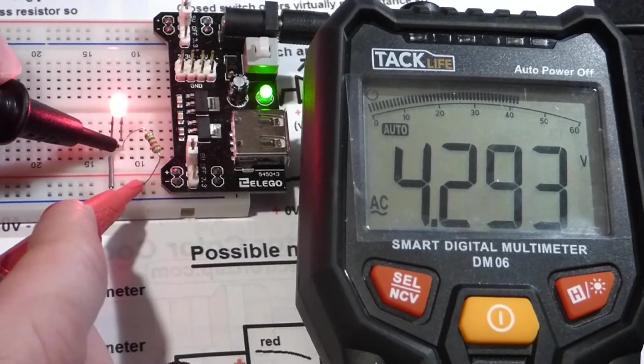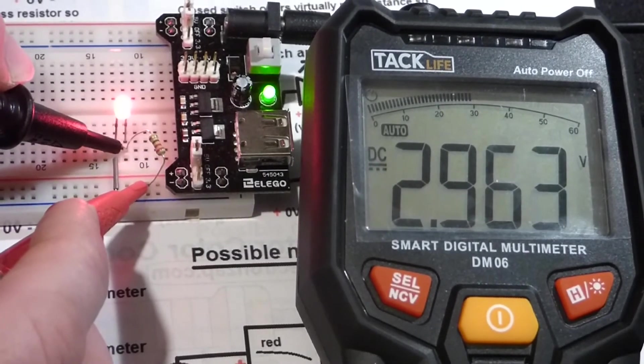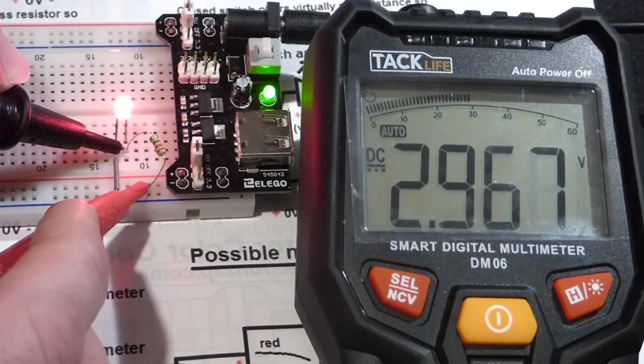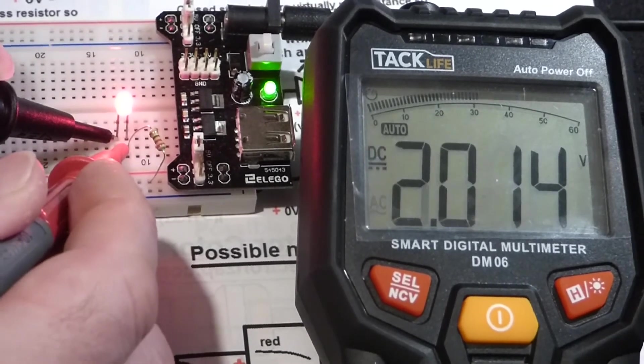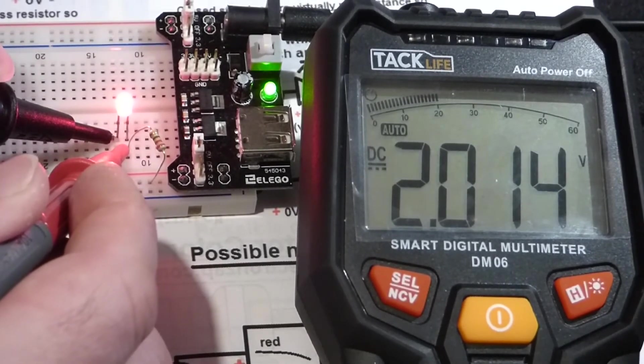Of course, there's a voltage across the resistor. It's about 3 volts in that range. That means the LED will have about 2 volts across it, as you can see there.